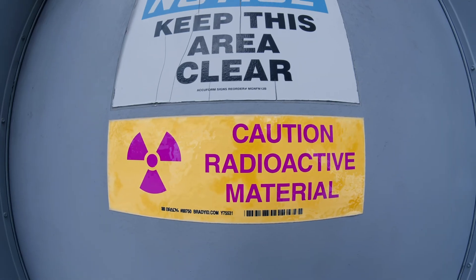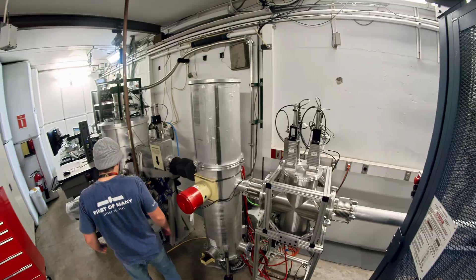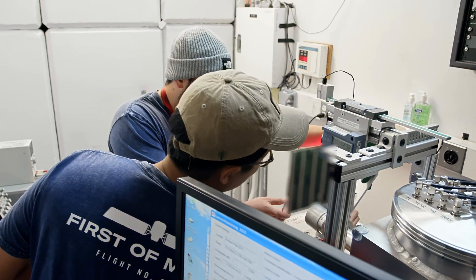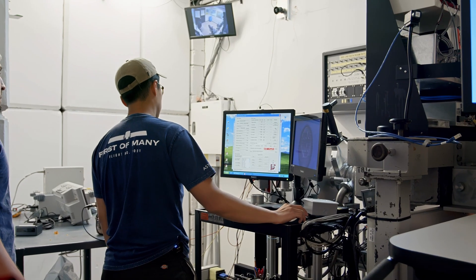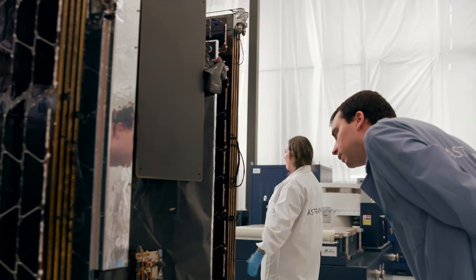We're here at Texas A&M to test some individual components for our Block II spacecraft. Here, we're using large particle accelerators like this one to shoot heavy ions and expose chips to do single event effects testing. If the chips pass the threshold, they're good to be integrated as-is into the greater satellite design.